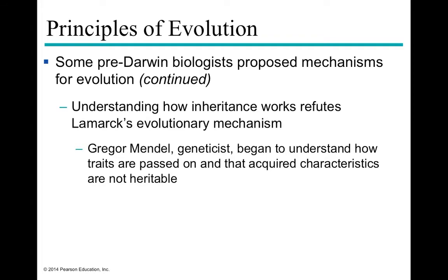At the same time, Gregor Mendel worked on pea plants and began understanding heritable units — what we now call genes and alleles. He recognized that acquired characteristics are not necessarily heritable. What must be passed on are actual genetic units — hereditary packets of DNA — transmitted from parent to offspring. For selective pressure to work, the variation must already exist in the population's genes.